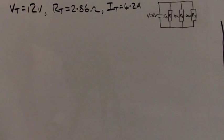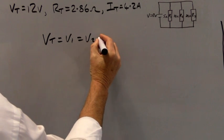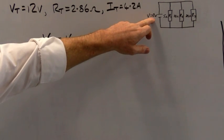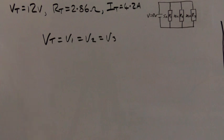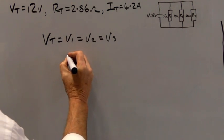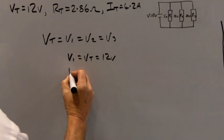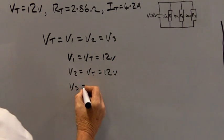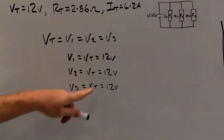The fourth thing we need to find is the voltage drop across each resistor. The rule for a parallel circuit is that VT equals V1 equals V2 equals V3. Looking at the drawing, the voltage source is connected across all the resistors, so we have 12 volts across each one. So V1 equals V2 equals V3 equals VT equals 12 volts. This is important because we'll need it for the next step.